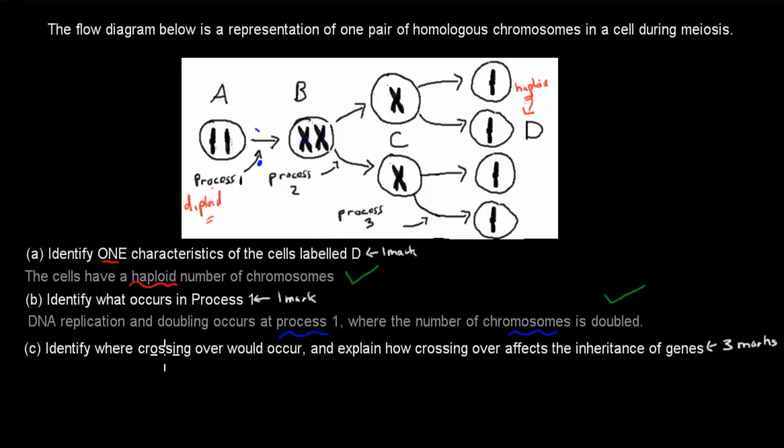And then C, identify where crossing over would occur. Explain how the crossing over affects the inheritance of genes. So first we've got to identify where it occurs, and that will get you a mark. And then we have to quickly explain what crossing over is and how it affects the inheritance of genes.